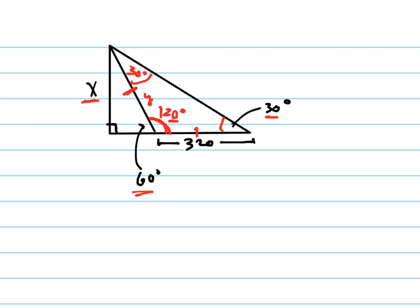So that triangle, I'll pull that triangle out. That smaller right triangle right there has 320 as the length of your hypotenuse, 60 degrees is here, and we need to find x.